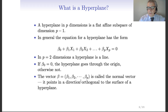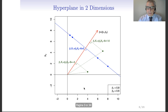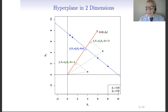The normal vector points in a direction orthogonal to the surface of the hyperplane. Looking at a hyperplane in two dimensions, you can see the normal vector beta with components beta one equal to 0.8 and beta two equal to 0.6. Their squares sum to one, so this is a unit-norm vector — keep that in mind.